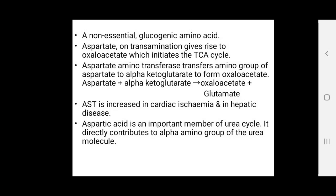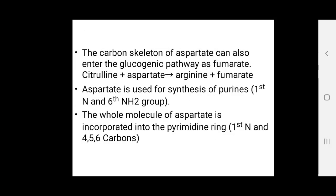Aspartic acid is an important member of the urea cycle and directly contributes the alpha-amino group of the urea molecule. The carbon skeleton of aspartic acid can also enter the glucogenic pathway as fumarate.